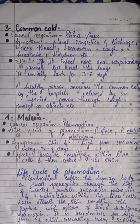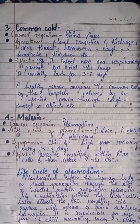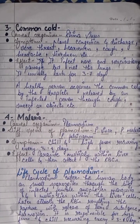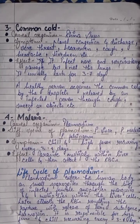Life cycle of Plasmodium: Plasmodium enters the human body as sporozoites through the bite of an infected female Anopheles mosquito. It then multiplies within liver cells, later attacks the RBCs, resulting in their rupture with release of a toxic substance called hemozoin. This hemozoin is responsible for the high fever and chills recurring every three to four days.